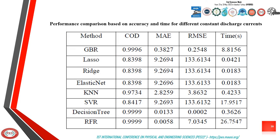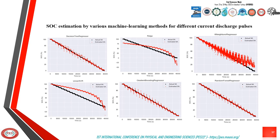The performance comparison of all methods for constant current discharge profiles shows that the random forest regressor has a minimum mean absolute error of 0.5% and a coefficient of determination of 0.99. LASSO and Ridge have the worst performance, with a coefficient of determination of 0.83. For variable current discharge profiles, LASSO and Ridge always offer the worst performance, while the random forest regressor still shows the best performance, with a mean absolute error of 3.84% and a coefficient of determination of 0.99. LASSO and Ridge are still the worst, with a coefficient of determination of 0.77.